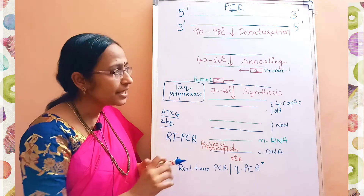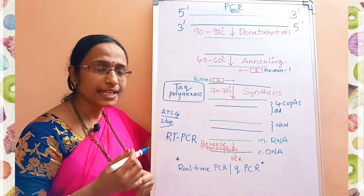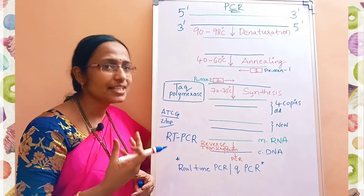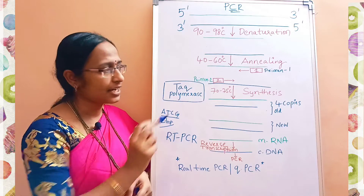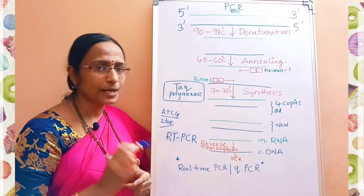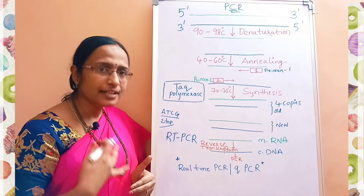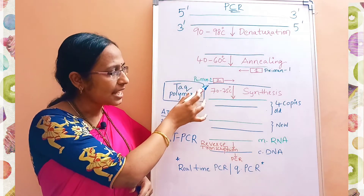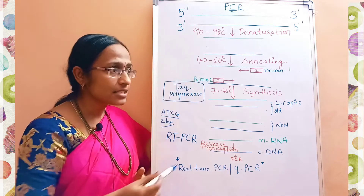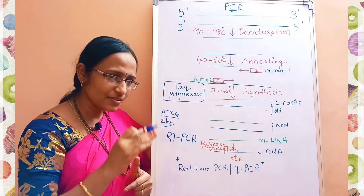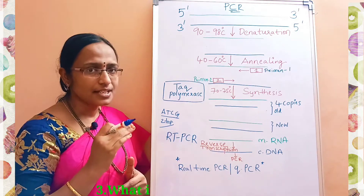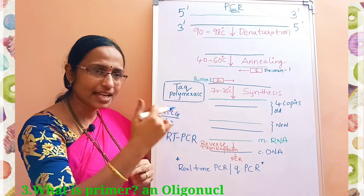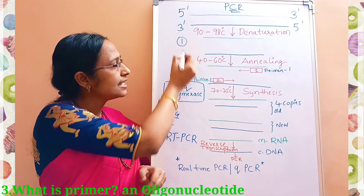The next step is annealing. In annealing, we add two primers — Primer 1 and Primer 2. These primers initiate the DNA replication and amplification process. Primer 1 anneals to the first strand and Primer 2 to the second strand. The temperature is reduced from 90-98°C down to 40 to 60 degrees centigrade, at which the primers identify their complementary DNA strands and get attached to them.